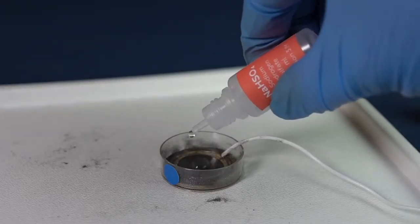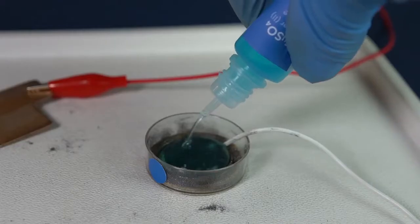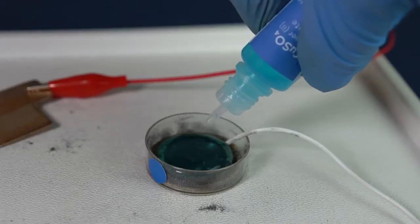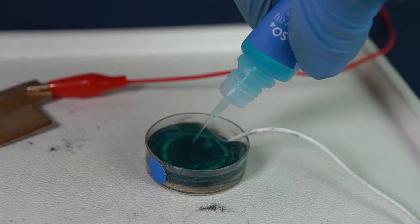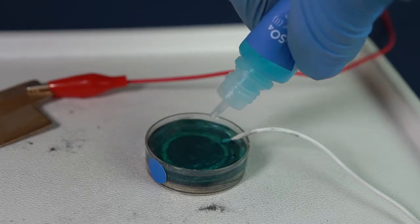In the Petri dish, pour in a whole bottle of copper sulfate and sodium hydrogen sulfate solution, which is the electrolyte. Then the solution will be able to conduct electricity and transfer copper ions.